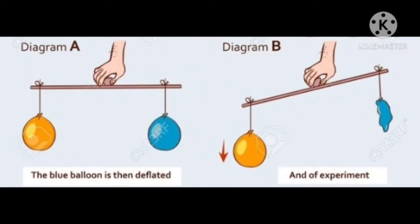Take a stiff wire or stick about 1 meter long. Blow two balloons and tie their strings to the two ends of the stick. Hang the stick by tying another piece of string to its middle. Move one of the balloons along the stick until it is balanced. Now make a small slit in the neck of one balloon to allow air to escape. What happens to the stick after almost all the air escapes? Why is it not balanced now? Which end is heavier? Yes — this proves that air has mass.